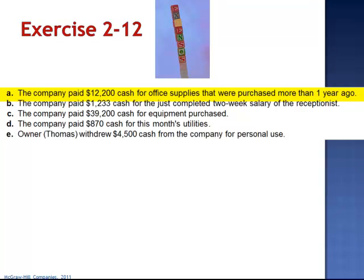Letter A: the company paid $12,200 cash for office supplies that were purchased more than a year ago. This transaction decreases assets and liabilities by $12,200, but leaves total equity the same. Since expenses result in decreases to equity, Letter A is not an expense.